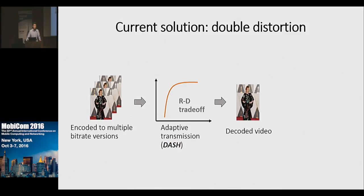I'm going to first show you that the current video streaming system using the rate-distortion trade-off is insufficient for our mobile energy issues. This is a typical architecture for video streaming. At the server side, the video is encoded into multiple bitrates, and the client will dynamically request a video bitrate version based on its network bandwidth for each of the video chunks. This is called Dynamic Adaptive Streaming over HTTP, or DASH.